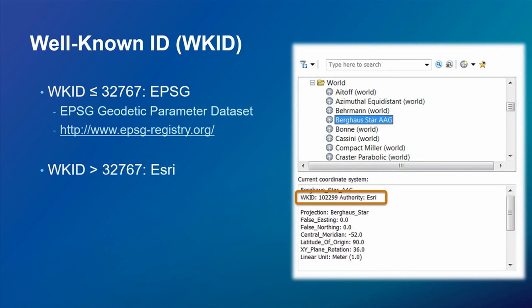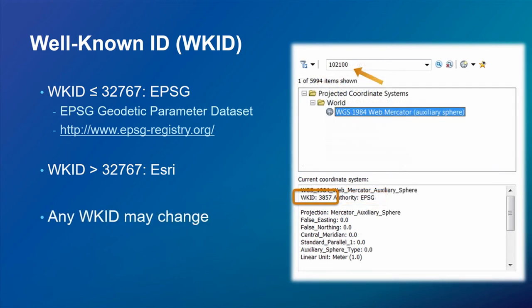If you see a WKID below 32767, it's defined by EPSG; numbers above that are generally defined by Esri. We may change an ID over time — for example, Web Mercator originally had Esri ID 102100, then EPSG added it as 3857. Either ID will work in the software. In a server-client environment, an older server may only know 102100, so a client might try 3857 first and fall back to 102100 if needed.